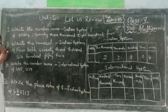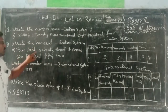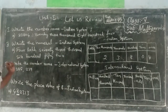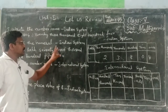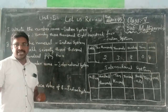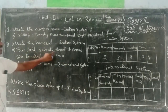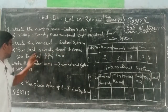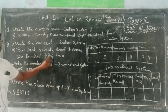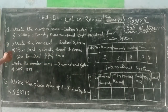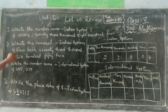Now come to the second bit: write the numerical form of the given. It is in the form of the Indian system. Here they have given 4 lakh 73,652. So, 4 lakh — whatever is there first, you have to start from your own words. It is 4.